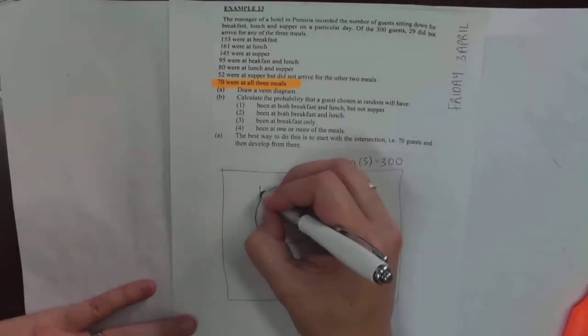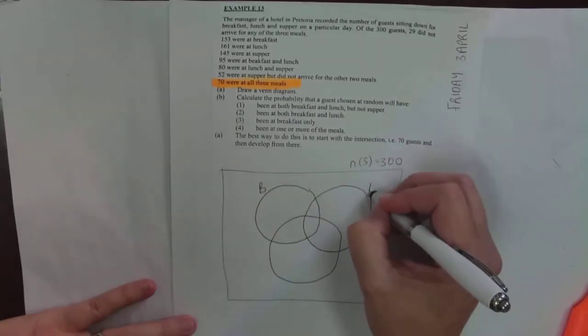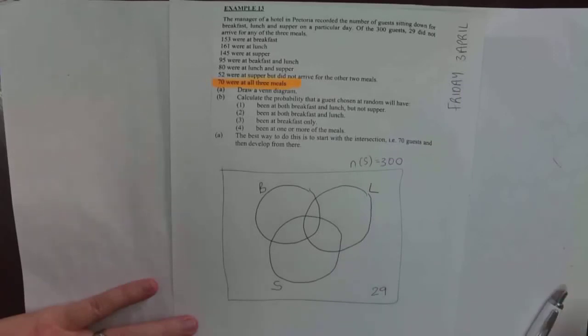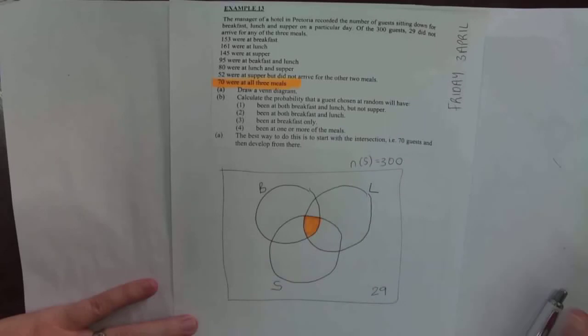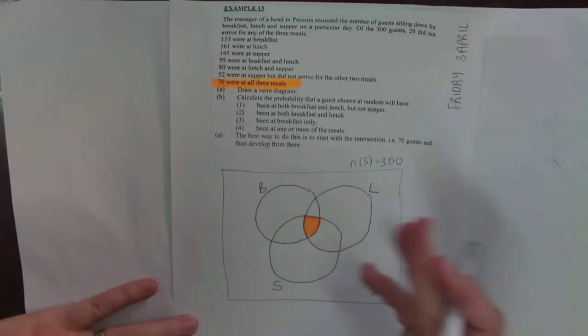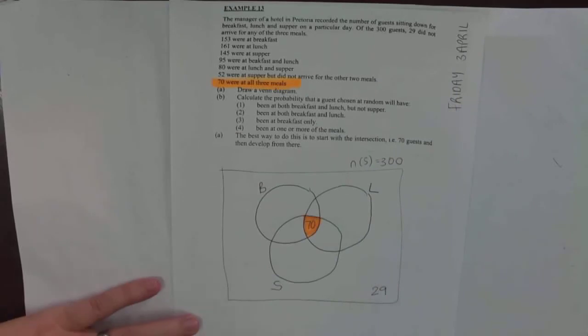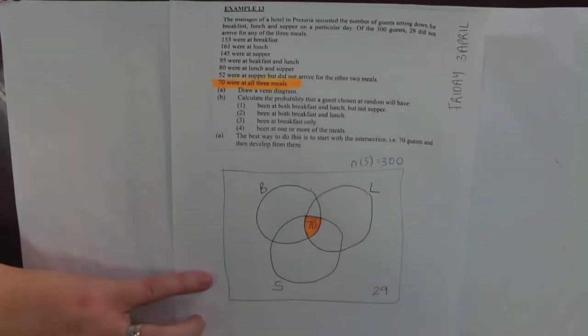So if I create my three events, I have breakfast, lunch, and supper. I want to start in the middle, and in the middle I have a total of 70 people.